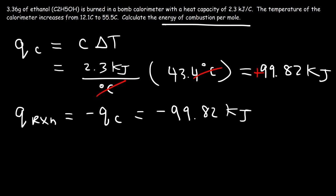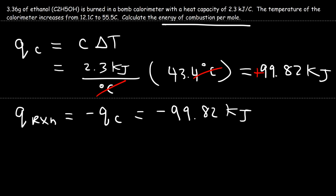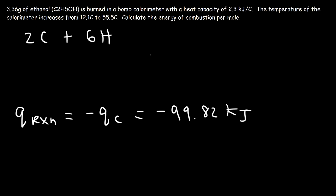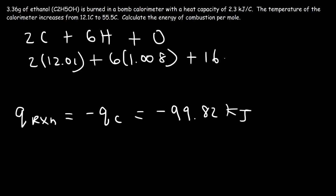Now we need the energy of combustion per mole, so we convert 3.36 grams of ethanol to moles. First, let's calculate the molar mass of ethanol (C₂H₅OH): 2 carbon atoms, 6 hydrogen atoms, and 1 oxygen atom. Using atomic masses of 12.01 for carbon, 1.008 for hydrogen, and 16 for oxygen gives a molar mass of 46.068 grams per mole.